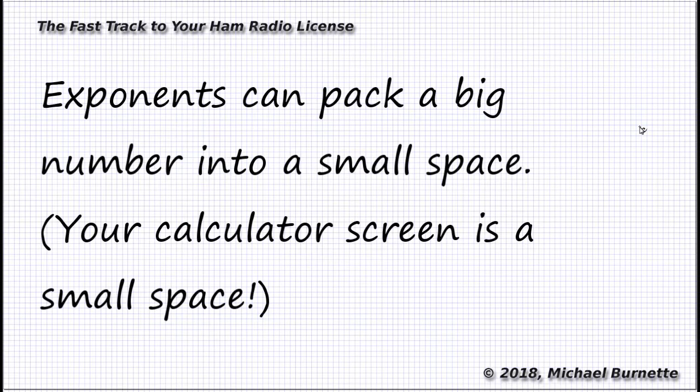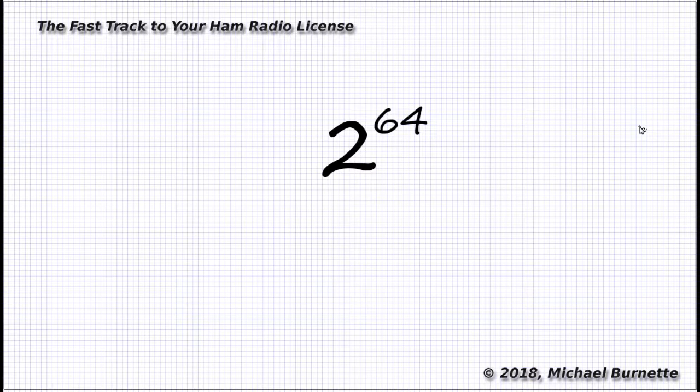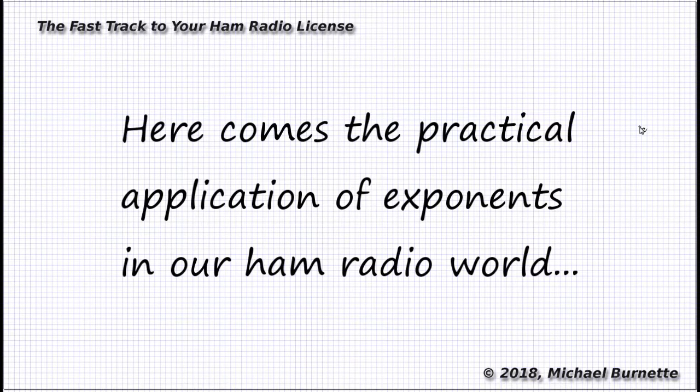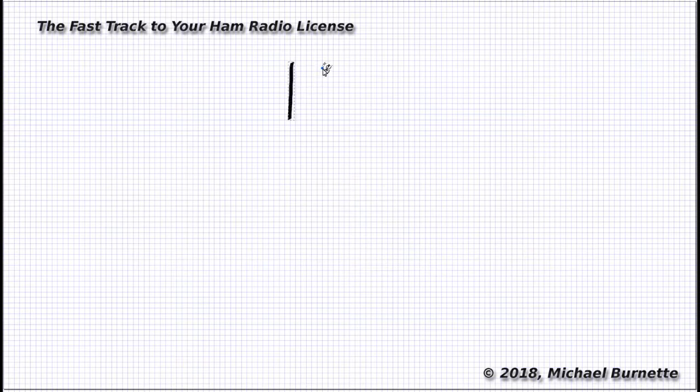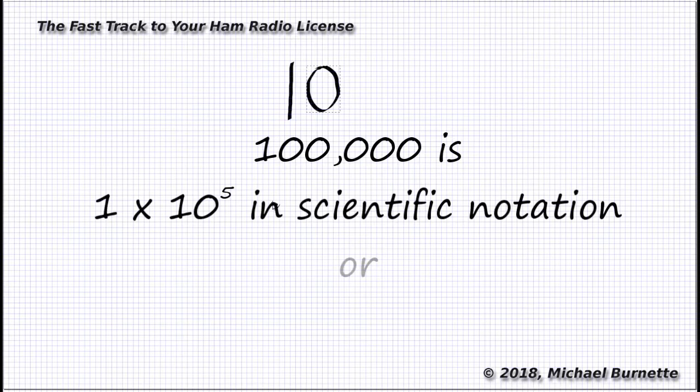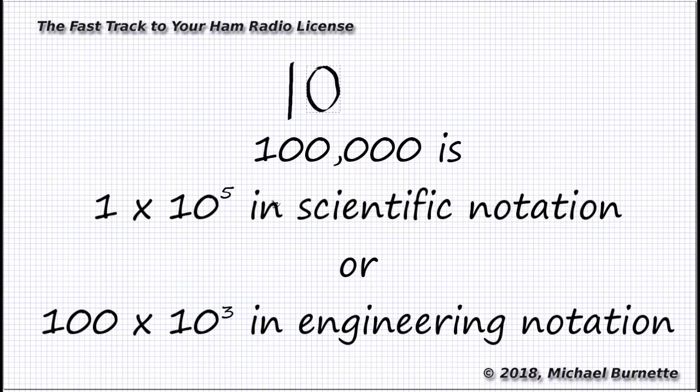Exponents are really handy for putting a lot of number into a little bit of space. For instance, we can write 2 raised to the 64th power, or we can write out, well, whatever this gigantic number is. Now, for us, an especially handy set of exponents is powers of 10. They're so useful to scientists, like you and me, they're often referred to as scientific notation. The specific values that we use the most are actually what's known as engineering notation. Engineering notation is just scientific notation that only uses exponents that can be divided by 3.